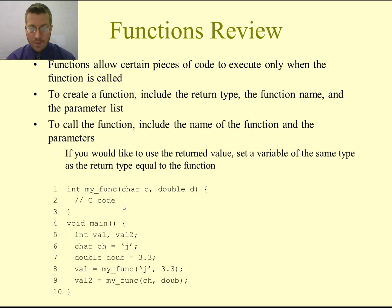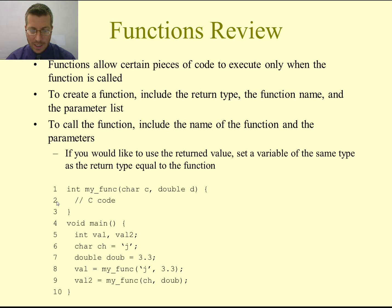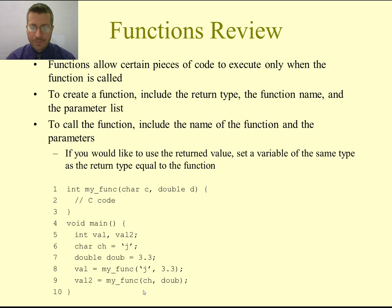If I change the value of that variable inside of this function, it will not change the value of the variable from the main function. So inside here on line 2, if I had said c equals 4.4, when I come back down to my main function and print out the value of ch, it will still be 3.3. It does not change the value of the variable in the function that called it. This is called passing a variable by value.